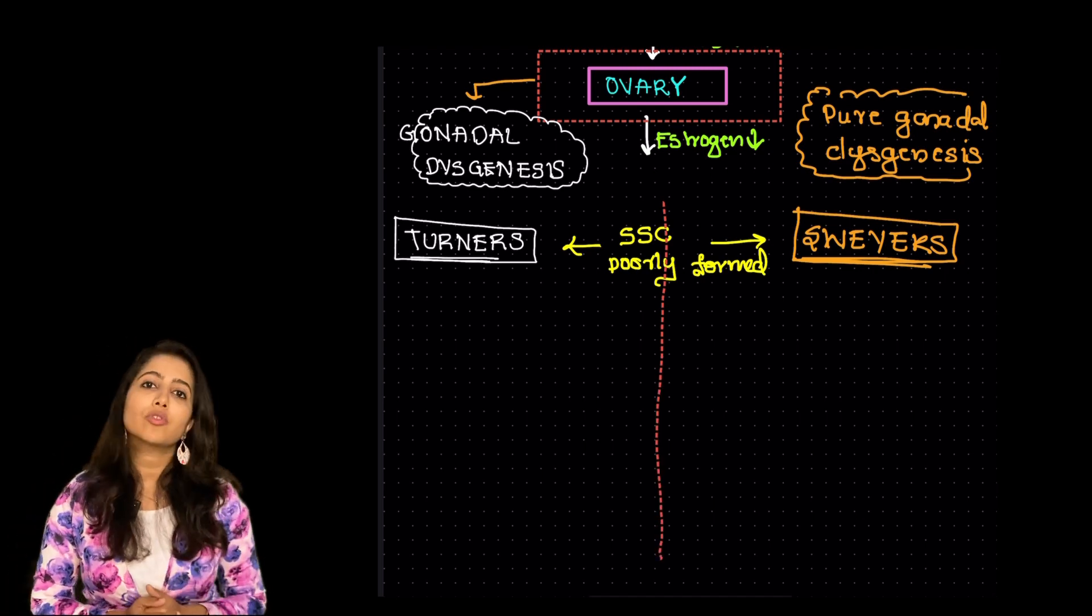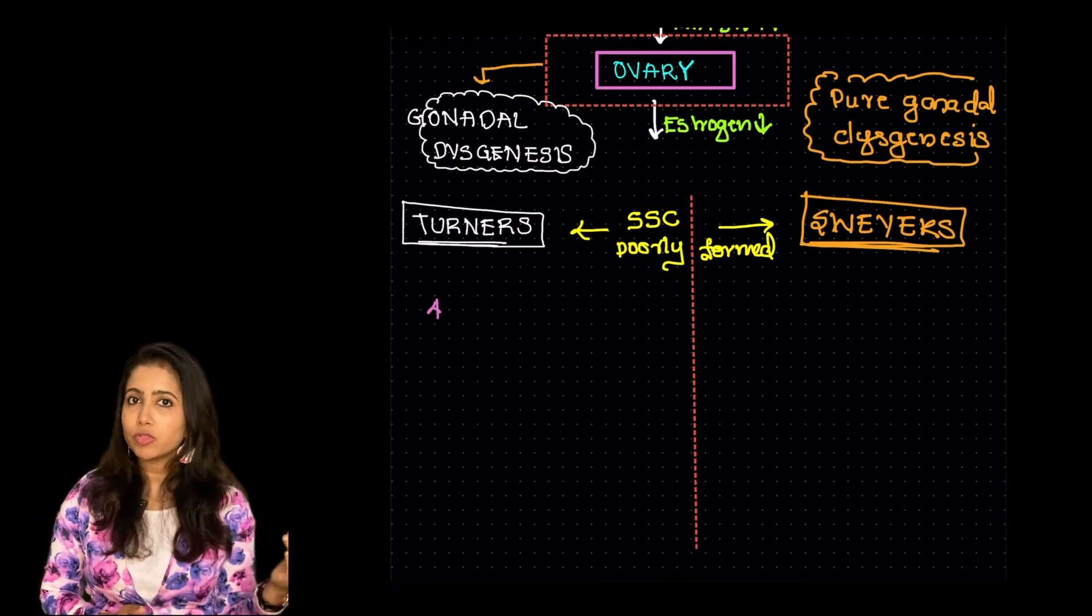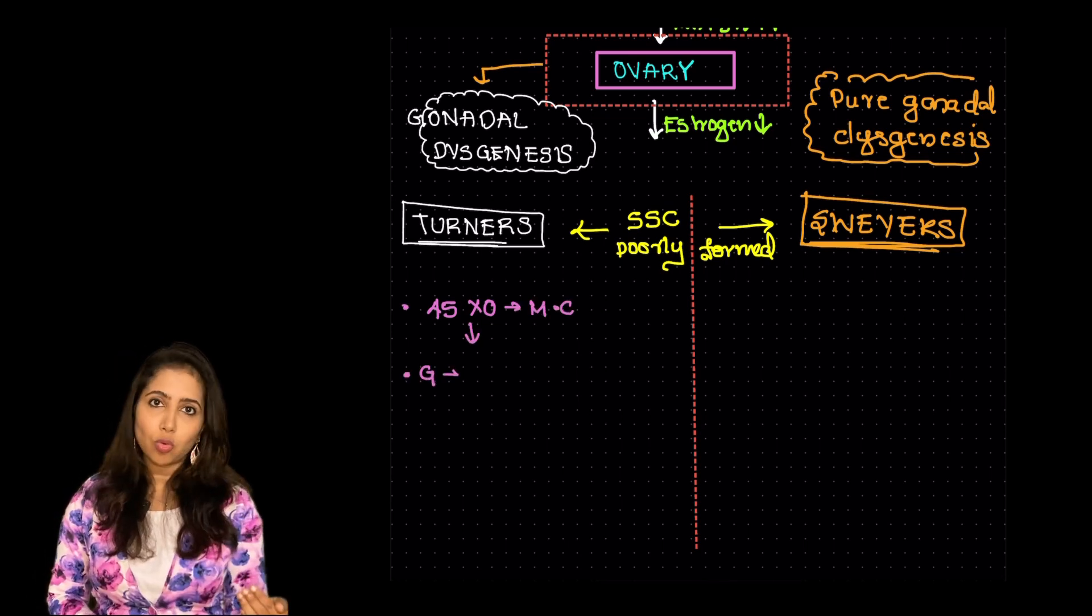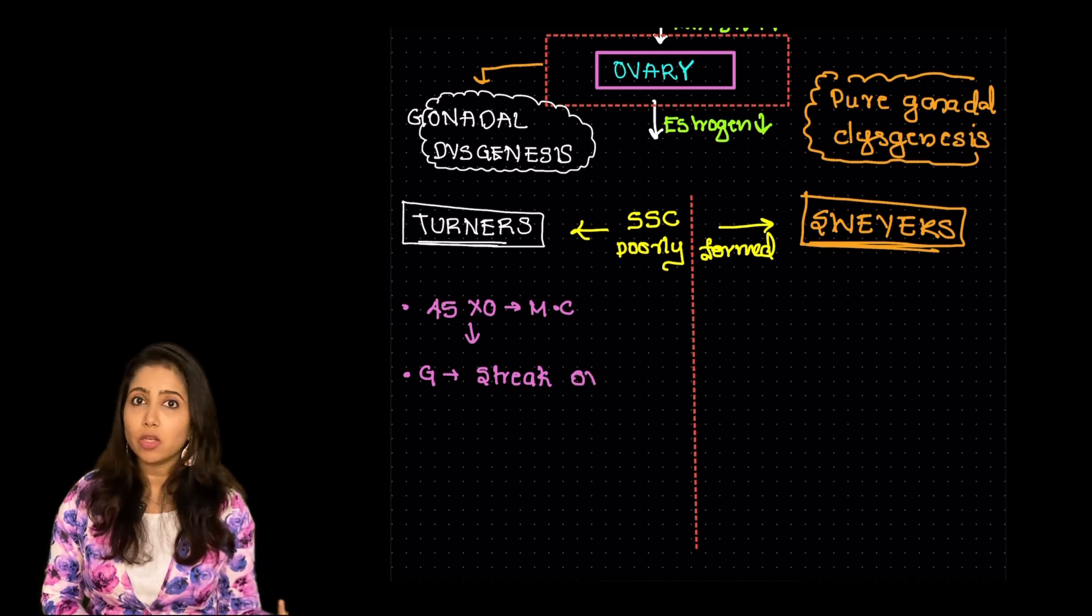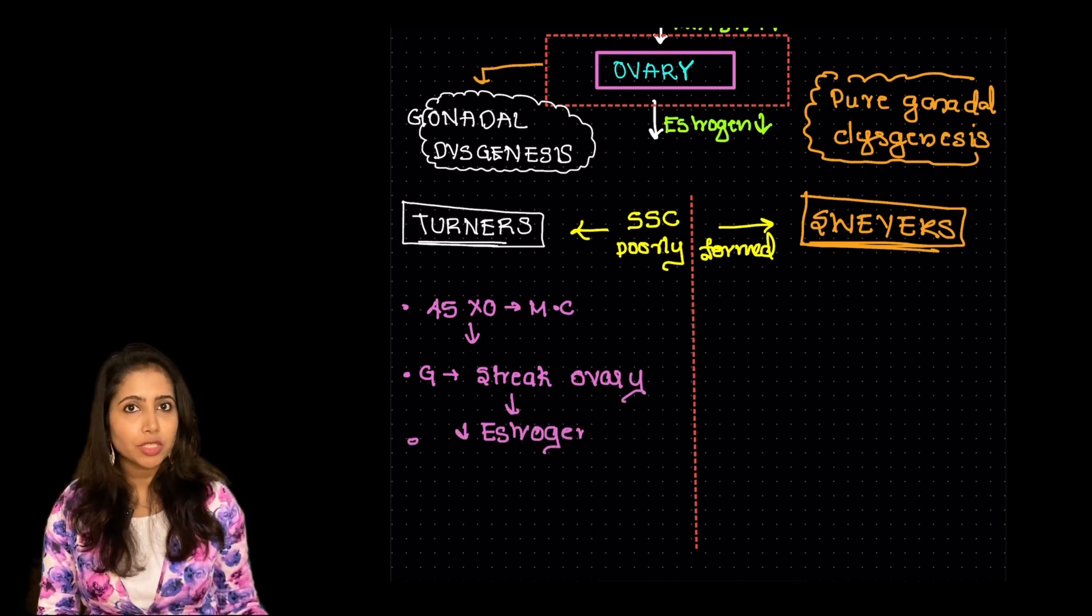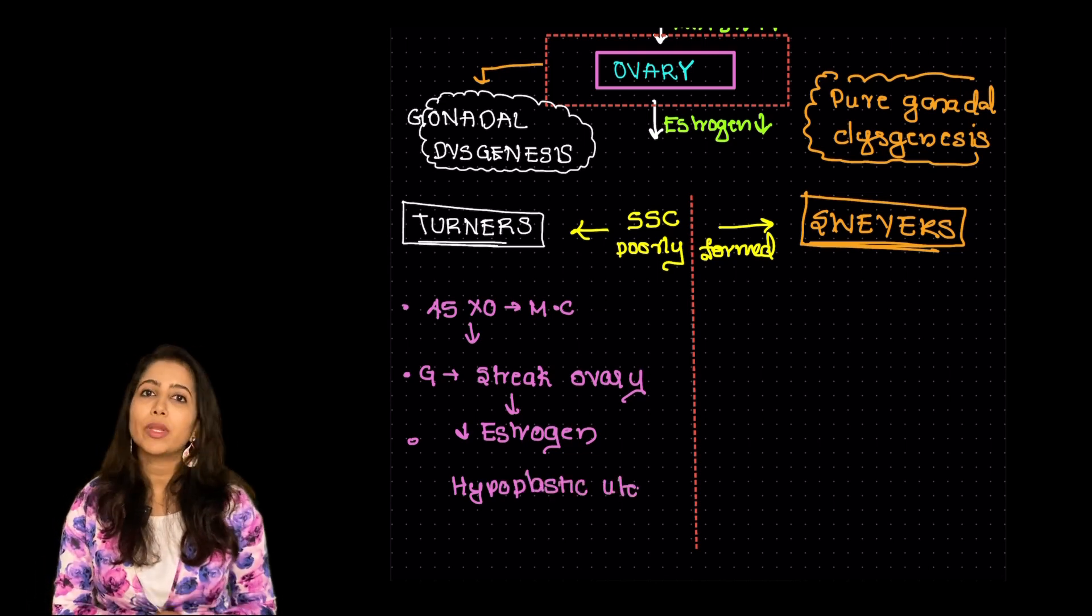So in Turner's syndrome what happens is that the chromosome is XO. So in this case as it is XO the gonads are streak ovaries. The streak ovaries would be producing less amount of estrogen. So the uterus is hypoplastic as well.